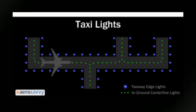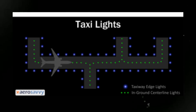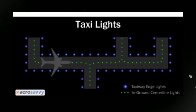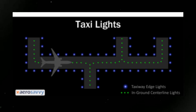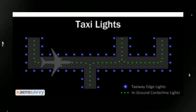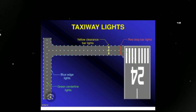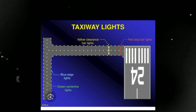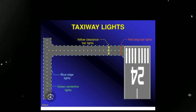Avoiding confusion: large airports may have multiple taxiways, intersections, and holding points. Taxiway lights play an important role in preventing pilots from accidentally entering the active runway or taking the wrong taxi route, thereby reducing the risk of a potential collision. During low visibility conditions, such as fog or heavy rain, taxiway lights create a visual reference for pilots, allowing them to maintain situational awareness and follow the correct taxi route.